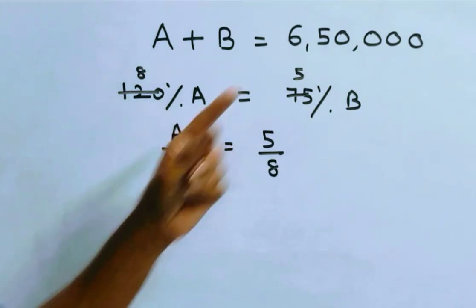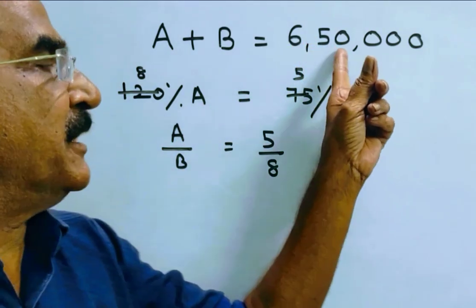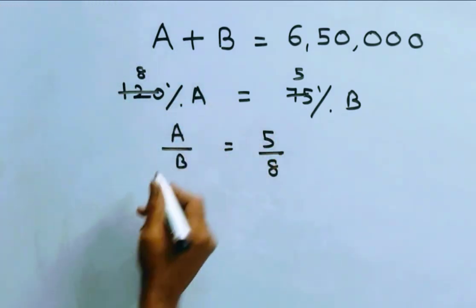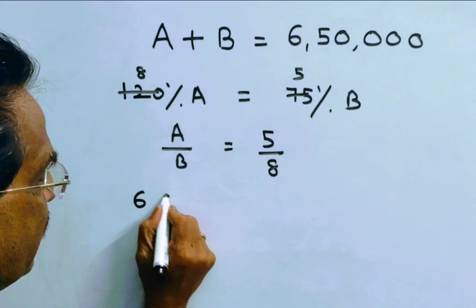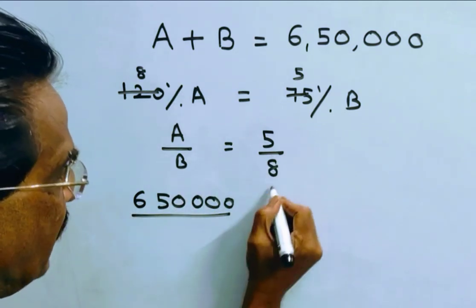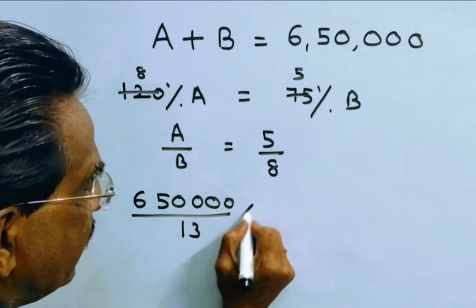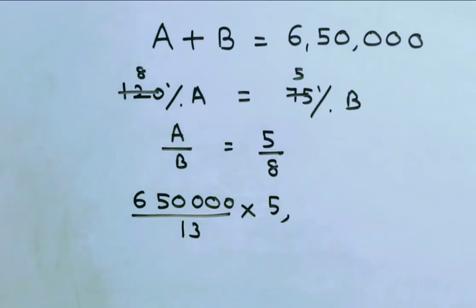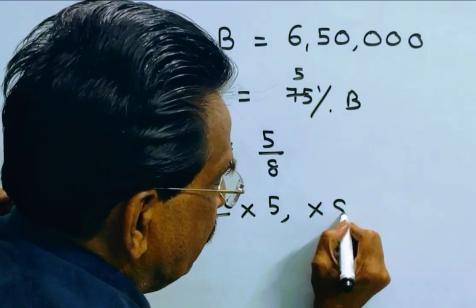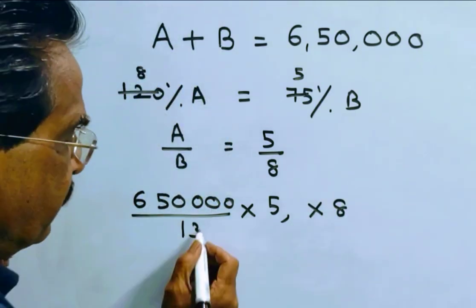Now let us divide 6,50,000 in the ratio 5 is to 8 to get the cost price of A and B. 6,50,000 by 5 plus 8, 13 into 5, we get the cost price of car A. Into 8, we get the cost price of B.